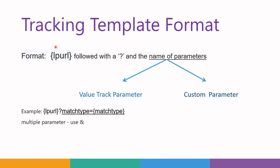Now let's see the tracking template format. Every tracking template starts with the curly brace and LP URL — meaning the landing page URL — followed by a question mark and the name of the parameter. There are two types of parameters: value track parameter and custom track parameter. Value track parameter is the parameter set by Google; you can use it as is. Custom parameter is where you define your own parameter based on your requirement. An example format is: landing page URL, question mark, match type equals match type — which is a value track parameter.